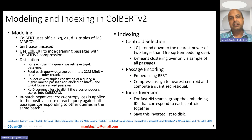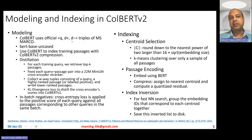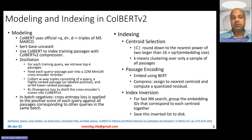ColBERT V2 also learns using a hard loss from labeled data, using in-batch negatives. In the same batch, there are multiple (Q, D+, D-) triples. It uses the positive document of other queries as the D- for the current query in the same batch.